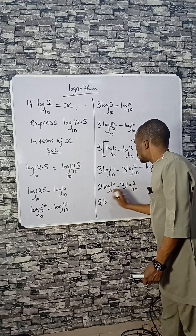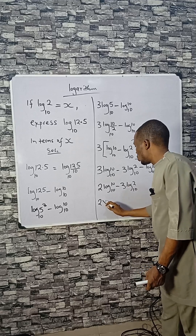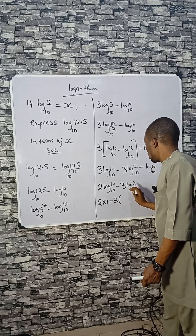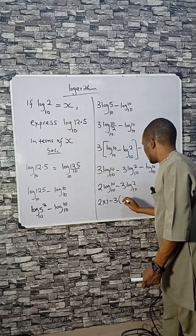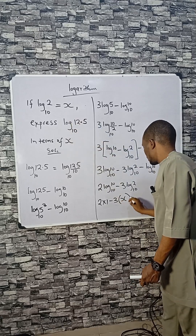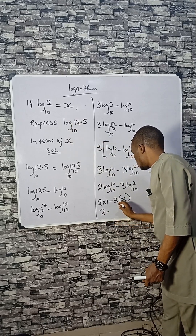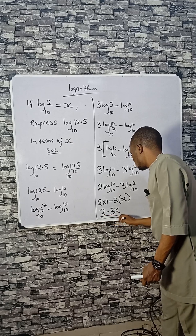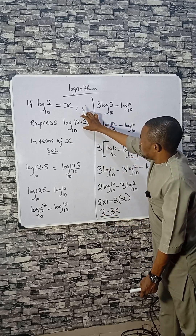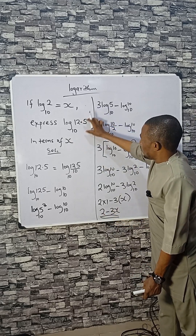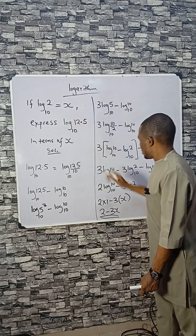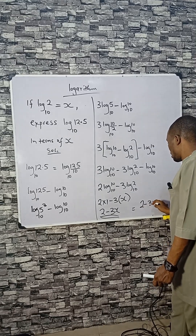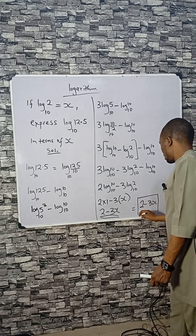Since log 10 base 10 equals 1, we get 2 times 1 minus 3 log 2 base 10. Since log 2 base 10 equals x, this becomes 2 minus 3x. Therefore, log 12.5 base 10 expressed in terms of x equals 2 minus 3x.